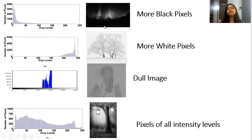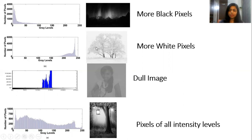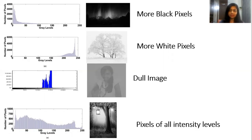Now let us look at different types of images. In this image black pixels are more, and hence the Histogram is more towards 0. In this image white pixels are more, so the Histogram is towards 255. This is a very dull image in which almost all pixels are gray, and the Histogram is at the center. This is a very good quality image in which pixels of all intensity levels are present, and the Histogram is nicely spread over the entire region.